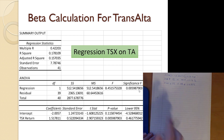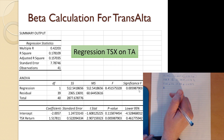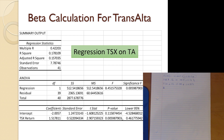Is the slope significant? The p-value is 0.00598879 — a very low p-value — so we would reject H₀ that the slope equals zero, and conclude that the slope is not equal to zero. Therefore the TSX return does have a significant impact on the return for TransAlta.